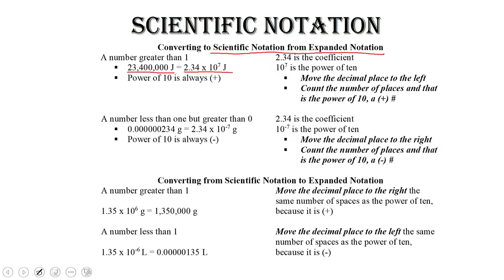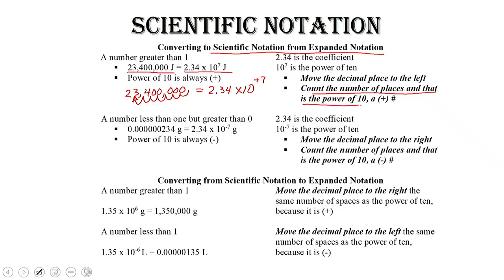First, we move the decimal place to the left. So if we've got 23,400,000, we move the decimal place to the left because it starts here, and we go 1, 2, 3, 4, 5, 6, 7. That gives us 2.34 times 10 to the positive 7, because the number is greater than 1. You count the number of places, and that is the power of 10.